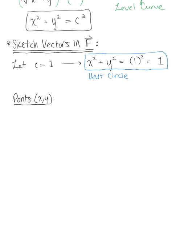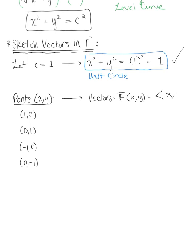We want to select some points on our level curve — the unit circle — starting with the x and y intercepts: (1, 0), (0, 1), (−1, 0), and (0, −1). We use these points to find the corresponding vectors defined by the radial field F(x, y) = ⟨x, y⟩. At the ordered pair (1, 0), the vector field equals ⟨1, 0⟩, which is just i-hat.